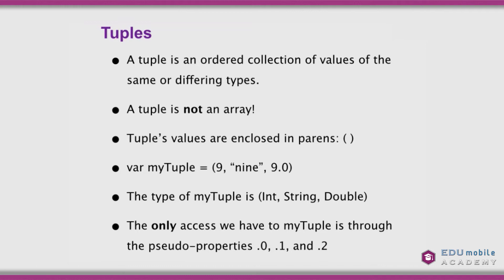The only access we have to this particular tuple is by using pseudo-properties .0, .1, and .2. So myTuple.0 gives us back the integer nine, myTuple.1 gives us the string "nine", and myTuple.2 gives us the double 9.0.